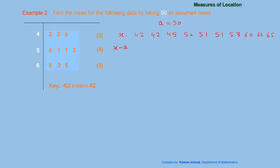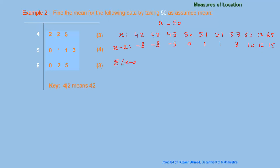Now we find x minus A by subtracting A from each value. So: 42 minus 50 is minus 8, 42 minus 50 is minus 8, 45 minus 50 is minus 5, then 0, 1, 1, 3, 10, 12, and 15. These are the x minus A values.